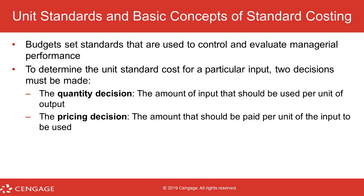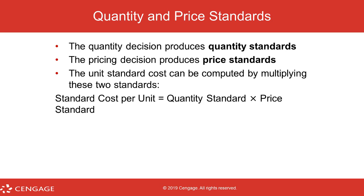Standard costing uses two factors: quantity and pricing. A good analogy to explain this might be making clothing. When you make a piece of clothing, you determine how much material goes into it — that would be the quantity. The pricing would be the price for that raw material that goes into making the product. If you take the quantity of the raw material used times the price of that raw material, that gives you the standard cost per unit.